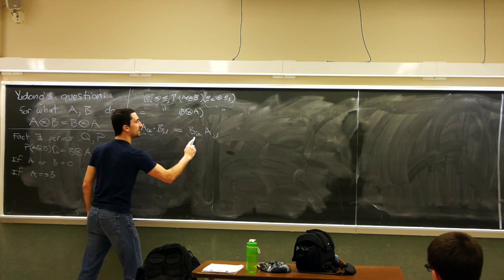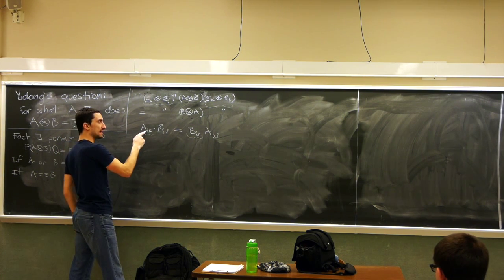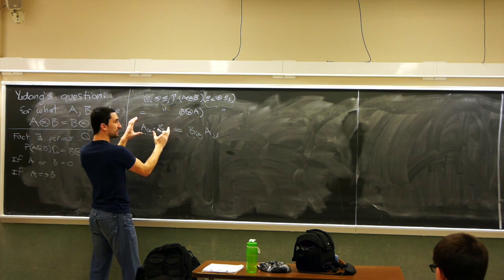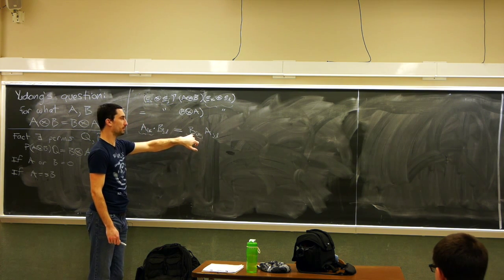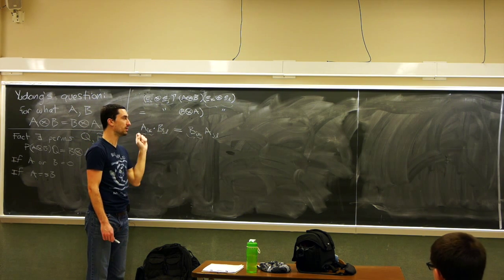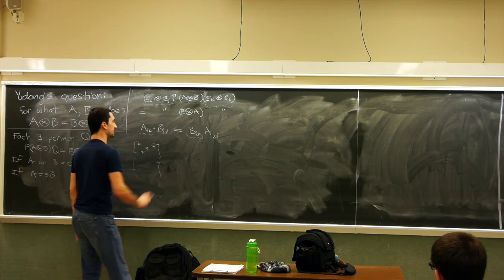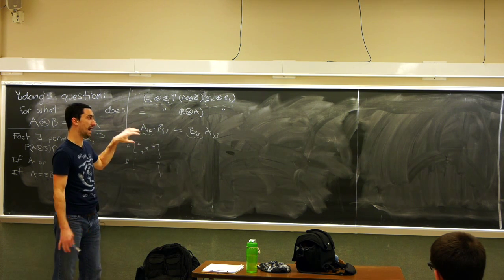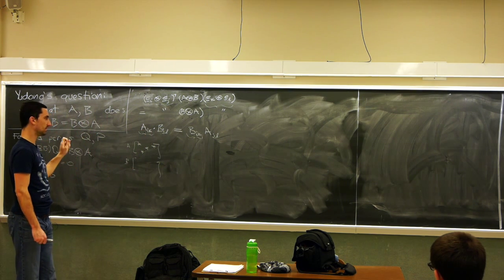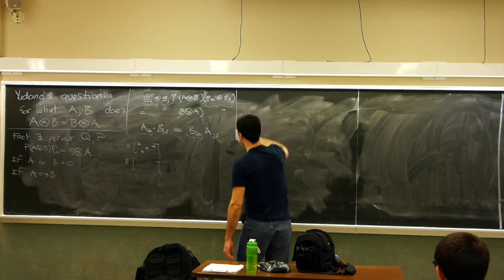Looking at the non-zero structure of A and B: any time entry IK of A is zero, that makes the left side zero, so the right side must also be zero. This implies B and A must have the exact same non-zero pattern. Furthermore, this condition is even stronger — you can get it to imply that one has to be a scalar multiple of the other.